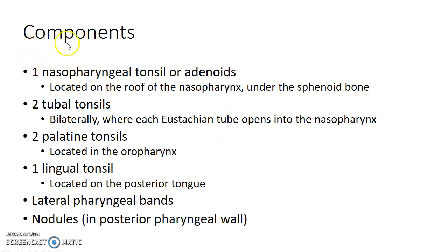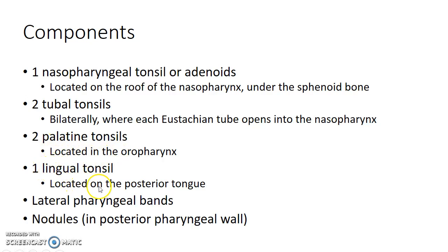The components are: 1 nasopharyngeal tonsil or adenoids, located on the roof of the nasopharynx under the sphenoid bone; 2 tubal tonsils, located bilaterally where each eustachian tube opens into the nasopharynx; 2 palatine tonsils, located in the oropharynx; 1 lingual tonsil, located on the posterior tongue. It also includes lateral pharyngeal bands and nodules in the posterior pharyngeal wall.